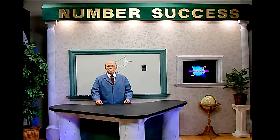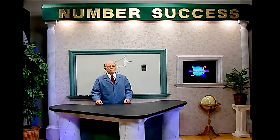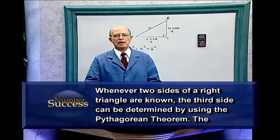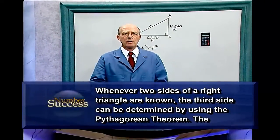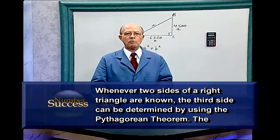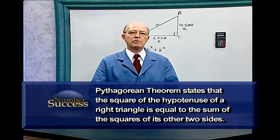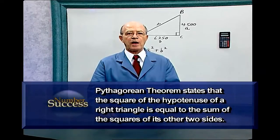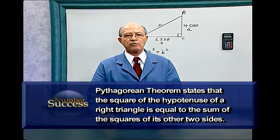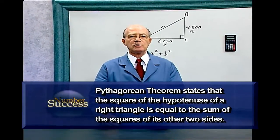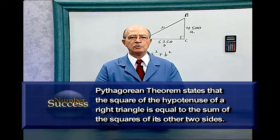Using a Scientific Calculator with Pythagorean Theorem. Whenever two sides of a right triangle are known, the third side can be determined by using the Pythagorean Theorem. The Pythagorean Theorem states that the square of the hypotenuse of a right triangle is equal to the sum of the squares of its other two sides.